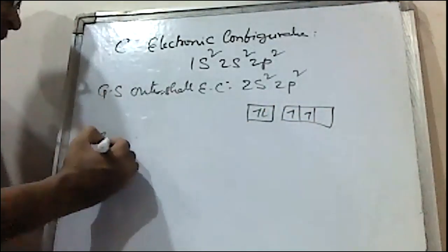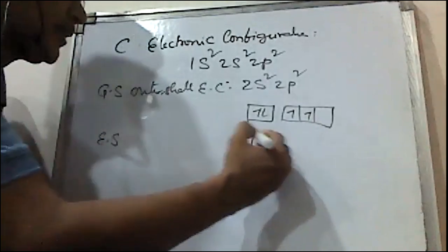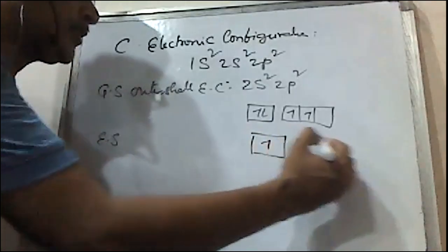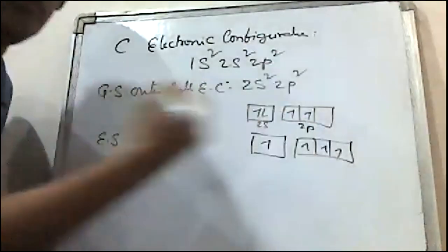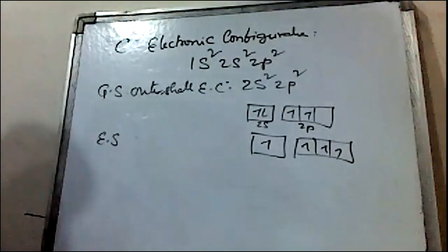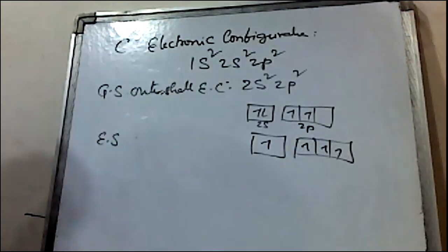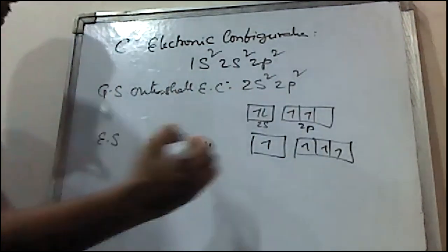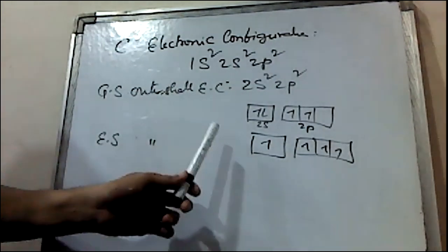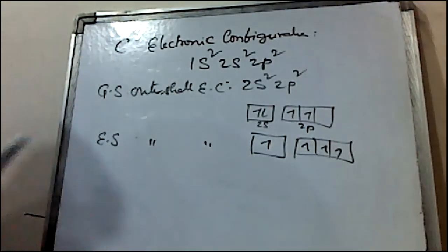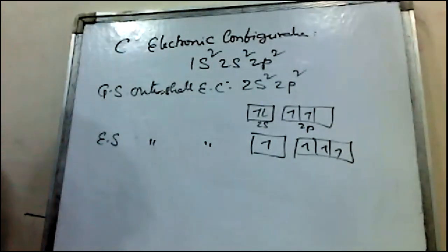In the excited state electronic configuration of carbon, one of the 2s electrons will be promoted to the 2p orbital. So the excited state outer shell electronic configuration of carbon has one electron moved from 2s to 2p.